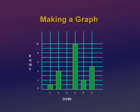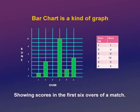Making a graph: a bar chart is a kind of graph. Here we show data which shows the number of overs and the runs scored in that over. On the y-axis we plot runs, on the x-axis we plot overs. The score in the first, second, and third over is 0; in the fourth over the score is 10; in the fifth over the score is 2; and in the sixth over the score is 5.